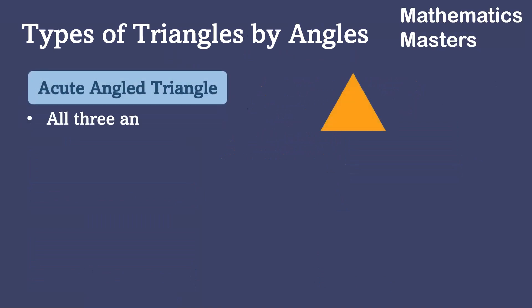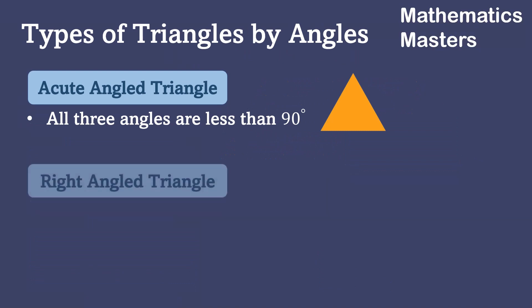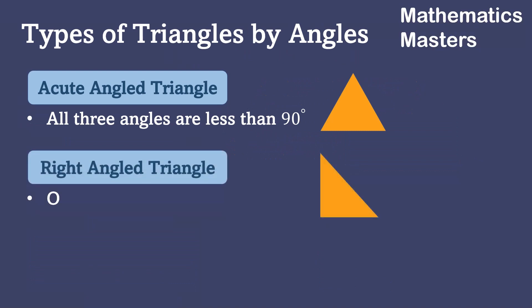An acute angle triangle is that type of triangle in which all its interior angles are less than 90 degrees. The second one is the right angle triangle. It is that type of triangle in which one angle is 90 degrees.